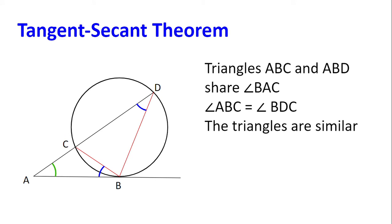Now, because they are similar, side AB on the larger triangle is to side AC on the smaller triangle, and side AD on the larger triangle is to side AB on the smaller triangle. And so AB divided by AC is equal to AD divided by AB, which we can rewrite as AB squared equal to AC multiplied by AD. And this result is called the tangent secant theorem.